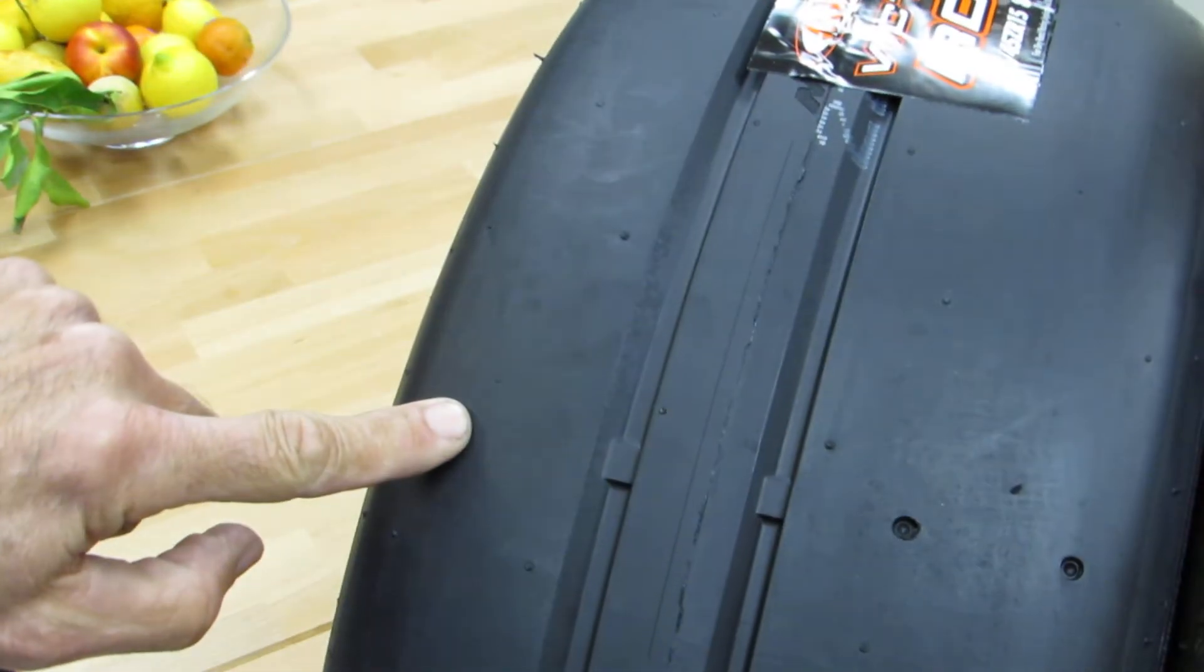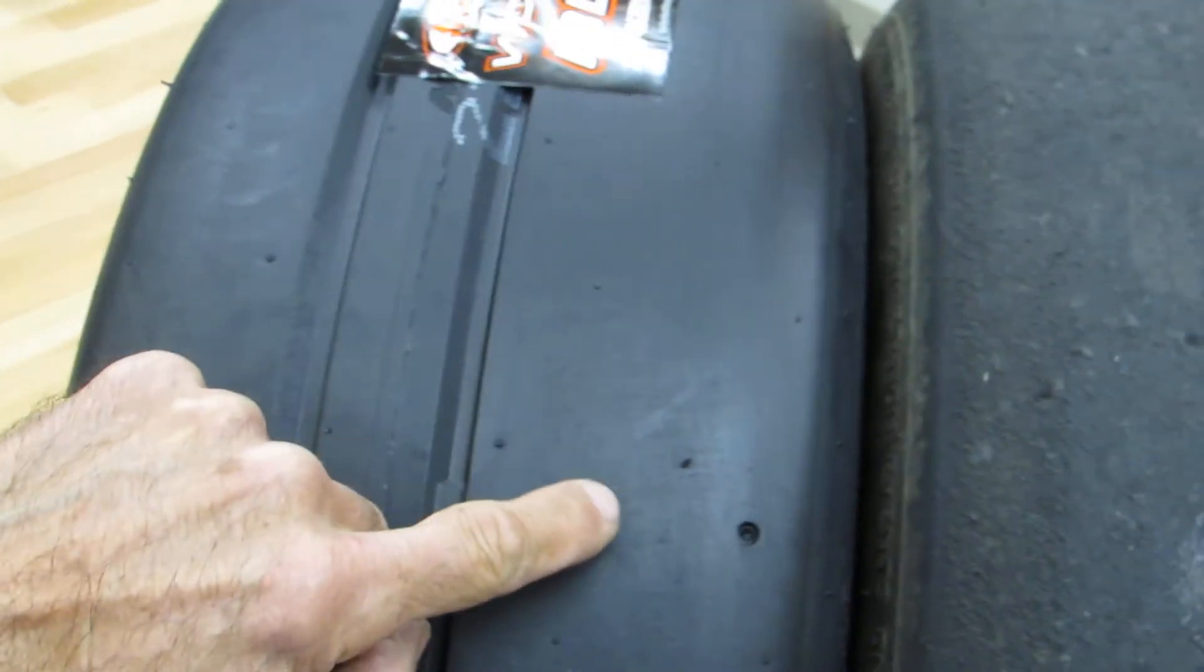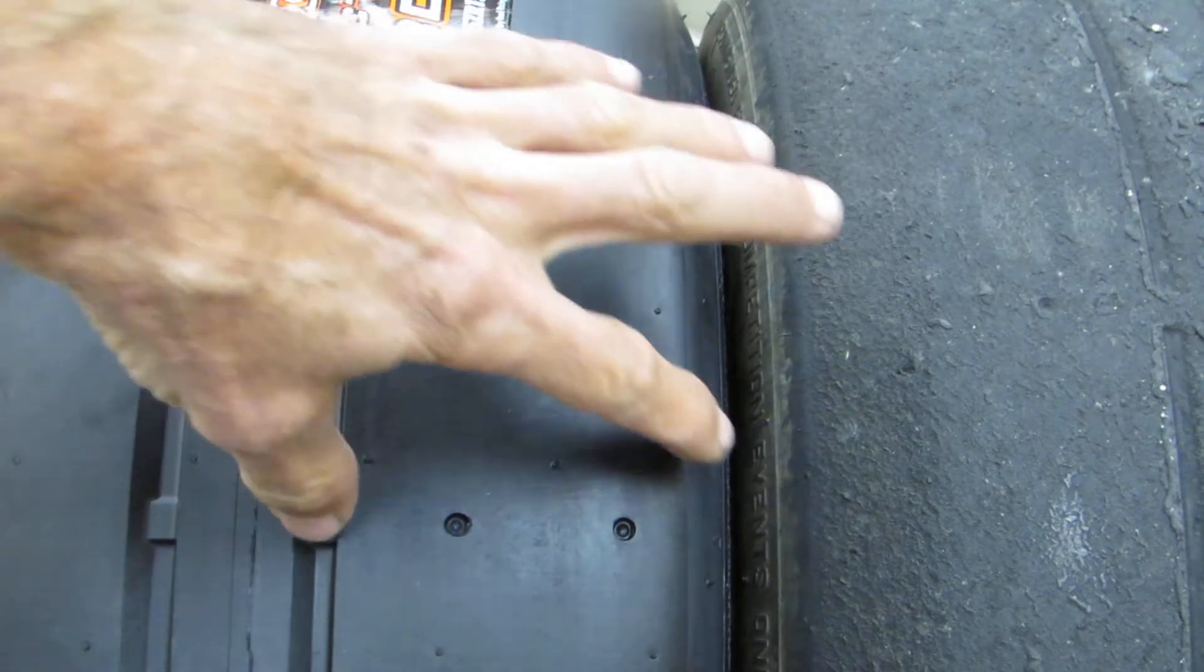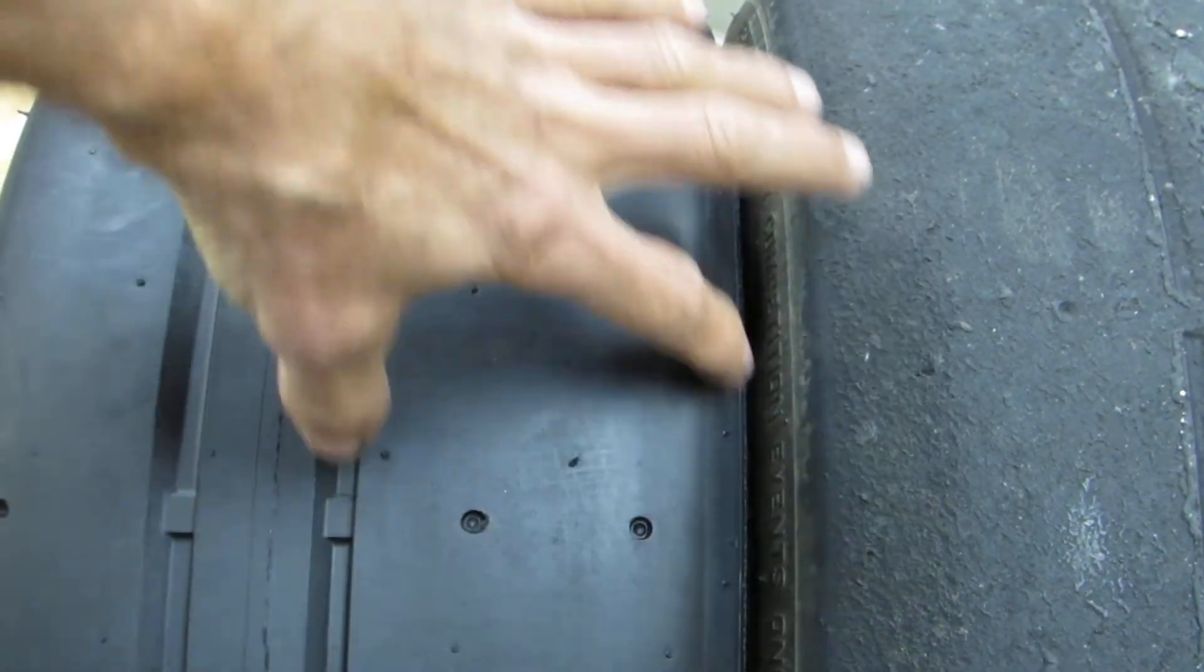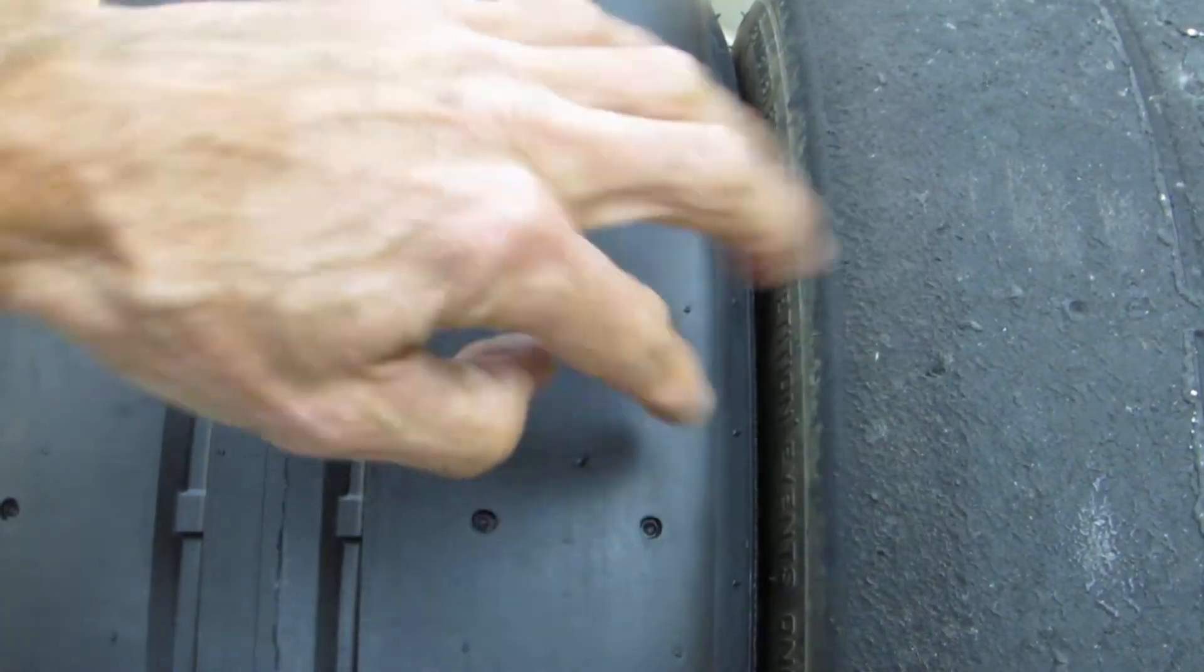Now what you'll notice here, this is the outside shoulder. The inside shoulder has one tread wear indicator, nothing in the center, and then there's two on the outer shoulder. It's an asymmetric tire, this outer tread block is a little wider so there's two indicators.